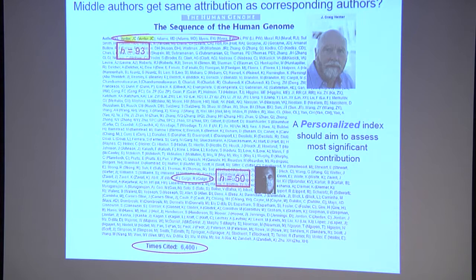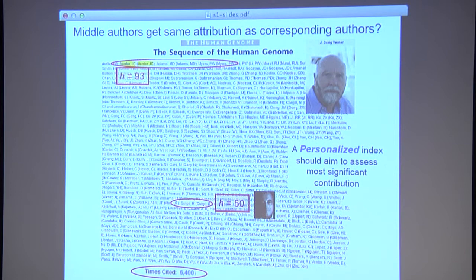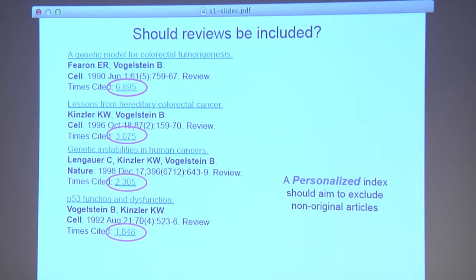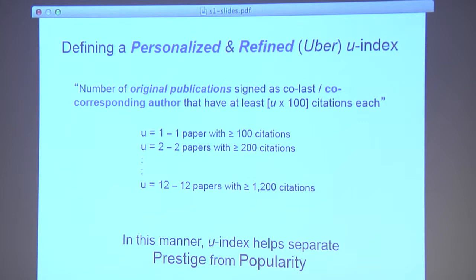What's the problem with conventional measures of scientific success? They count everybody the same. There's no individual separation for those who made the most significant contribution — like Craig Venter to the sequencing of the human genome — versus those among the hundreds of authors in the middle. They both get the same attribution for the paper. And reviews are used to gain impact factors because they tend to get far more citations than original contributions. We believe a personalized index should exclude these.